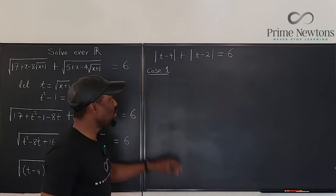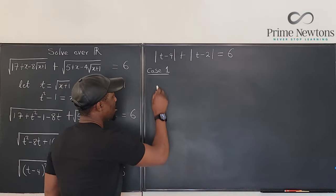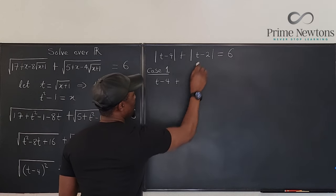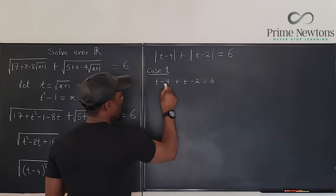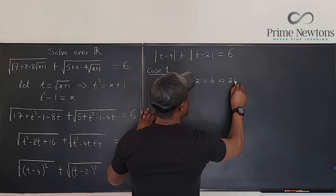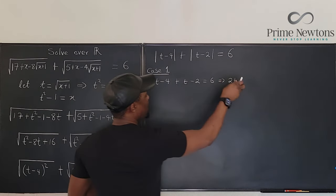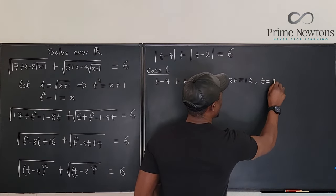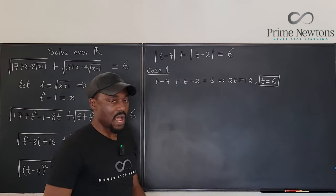In case one, I'm going to treat this as positive and treat this as positive. So both positive. I'm going to say t minus four plus t minus two equals six. That's going to be, this implies two t minus six. When this goes here, it becomes equal to 12. So t equals six is an answer. I got one solution.